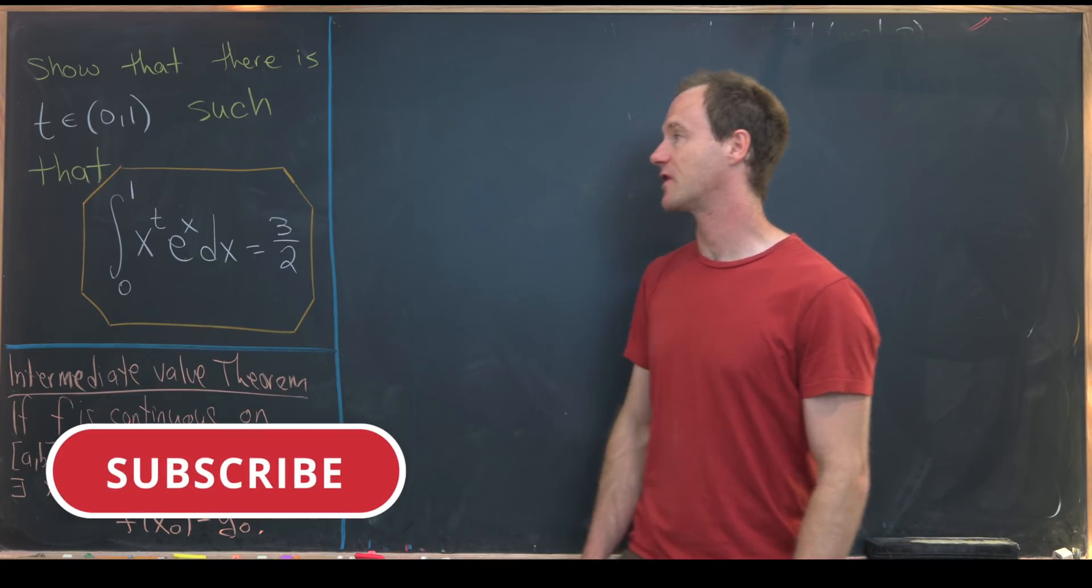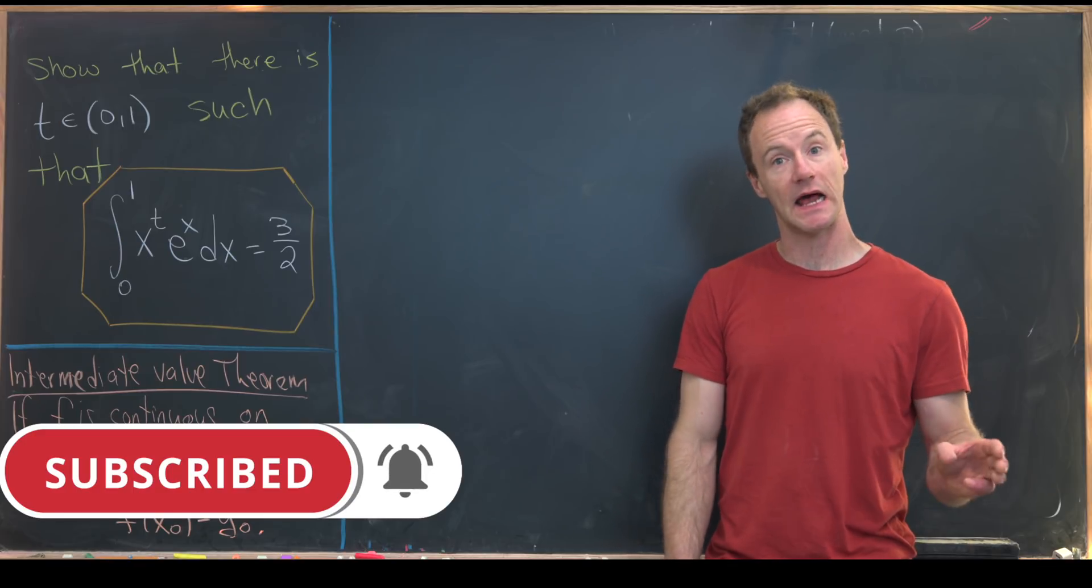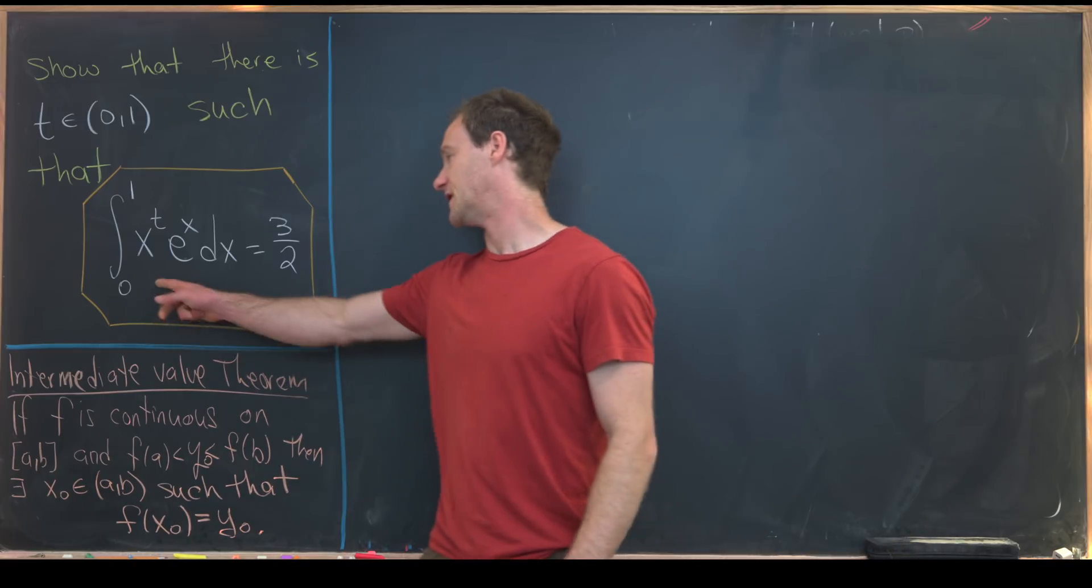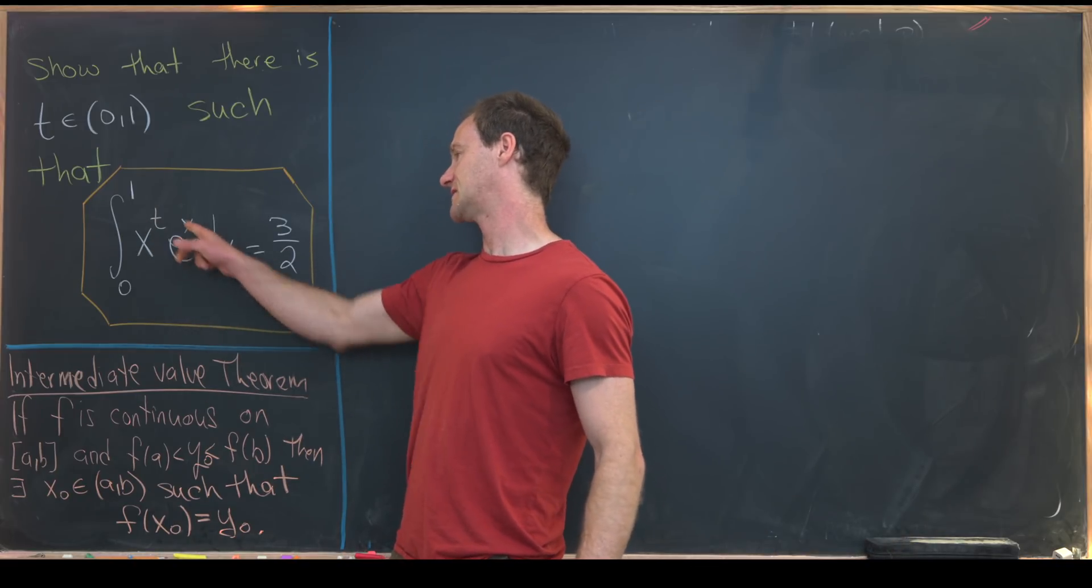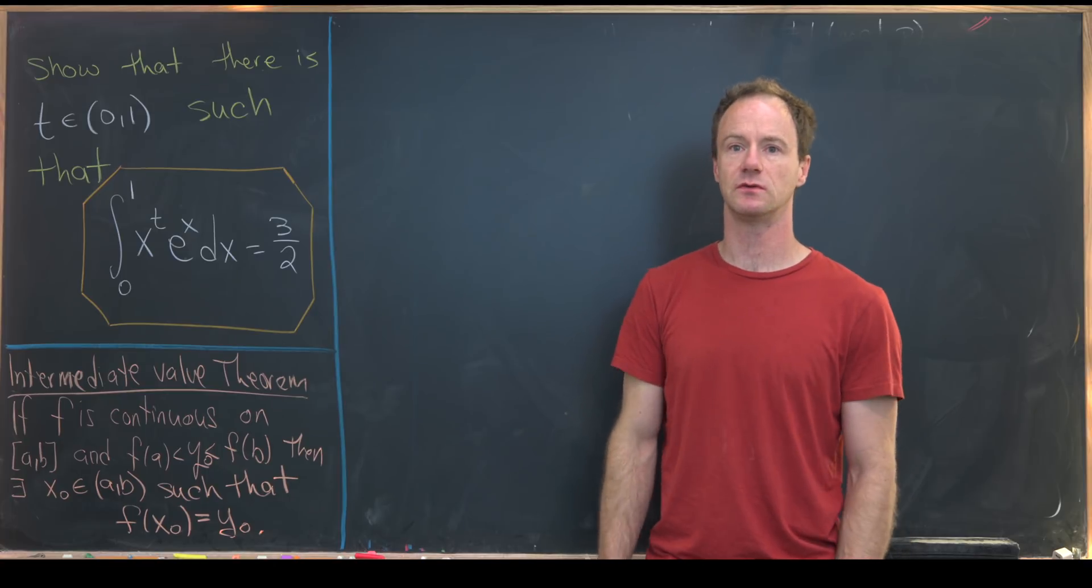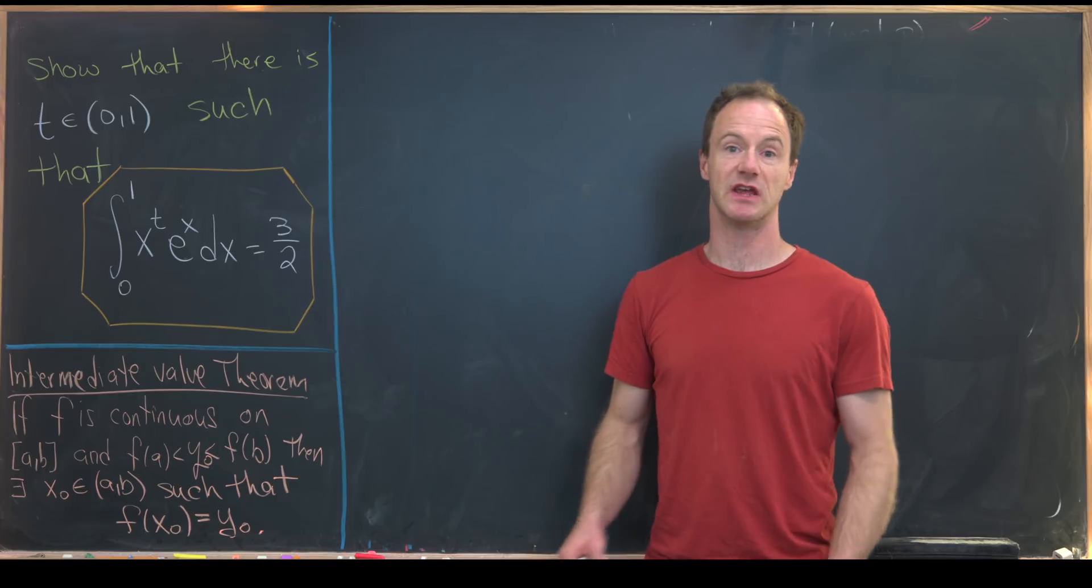We want to show that there is a t, which is between 0 and 1, not including 0 and not including 1, such that the integral from 0 to 1 of x to the t e to the x dx equals 3 over 2. Notice 3 over 2 is 1 and a half, so that's actually going to be kind of a hint here.